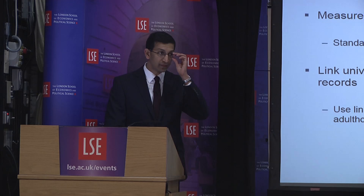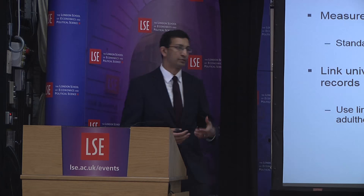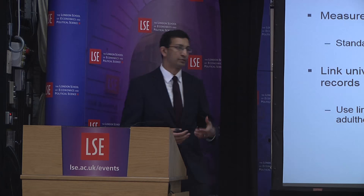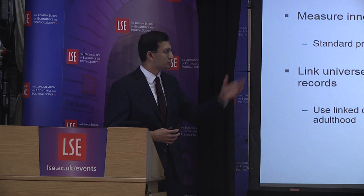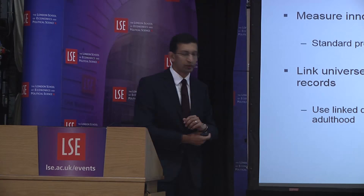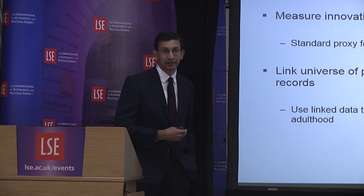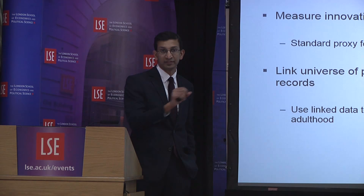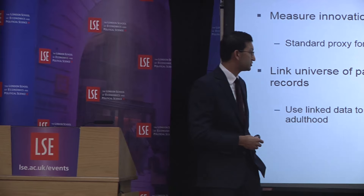What I'm going to present is based primarily on a paper with John Manreen and other co-authors called 'The Life Cycle of Inventors.' We measure innovation using patents, which is a standard proxy for invention with well-known pros and cons. We link the universe of patent records in the United States to the tax data I've been discussing, and using that linked data we're able to study the lives of 750,000 patent holders from birth to adulthood.